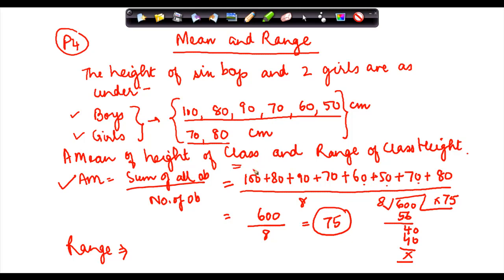I can either arrange them in the ascending order, or I can find out by looking at them which is the highest observation. The highest observation in my case is hundred minus which is the lowest observation? Lowest observation is fifty. So the range of the class is fifty and the arithmetic mean is seventy-five.